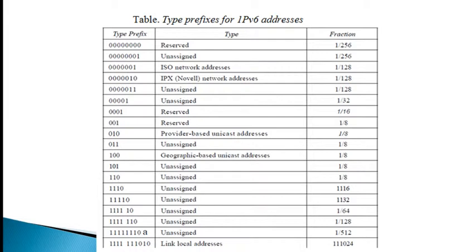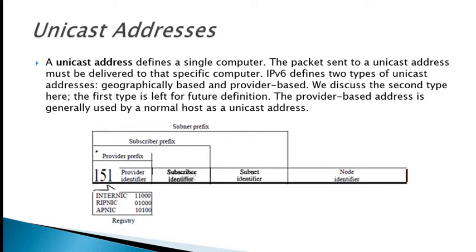The unicast address defines a single computer. A packet sent to a unicast address must be delivered to that specific computer. IPv6 defines two types of unicast addresses: geographically based and provider based. The provider-based address is generally used by normal hosts as a unicast address, and the address format is shown in the figure.